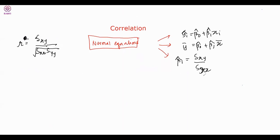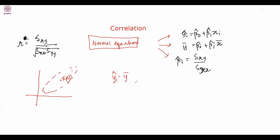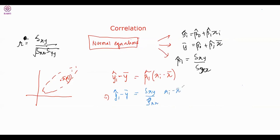Let's explore what we can derive from here. We want to standardize yᵢ. Consider ŷᵢ − ȳ: β̂₀ cancels, and we get β̂₁ times (xᵢ − x̄). Writing out β̂₁ as SXY / SXX, we get SXY / SXX times (xᵢ − x̄). Now we want to standardize x as well.